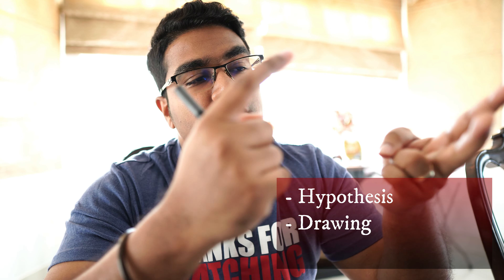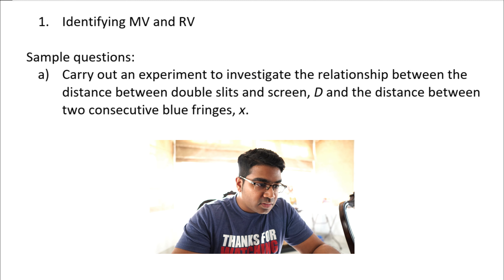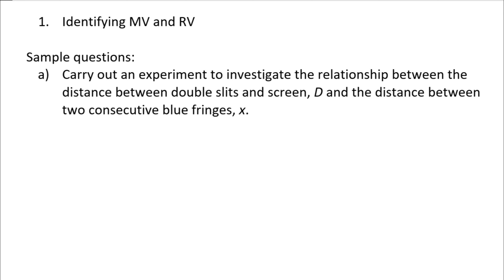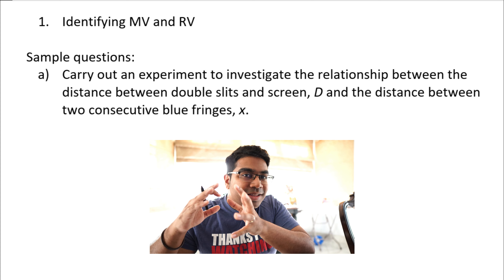Identifying MV and RV is the most crucial step because you are going to use your MV and RV for your hypothesis, to draw your table, and for your operational definition. Your MV and RV is usually given to you in the question, so I'm going to teach you how to pick it out. Let's look at the physics question first: 'Carry out an experiment to investigate the relationship between...' This is one way they can frame the question.